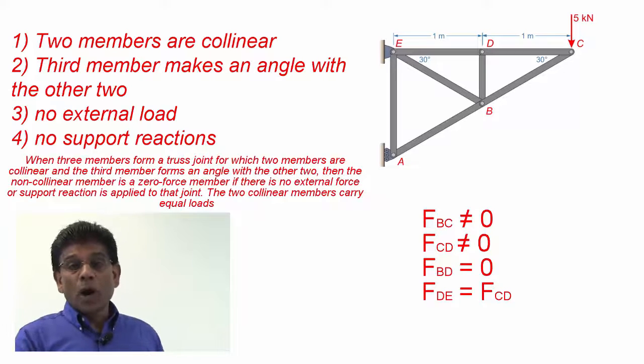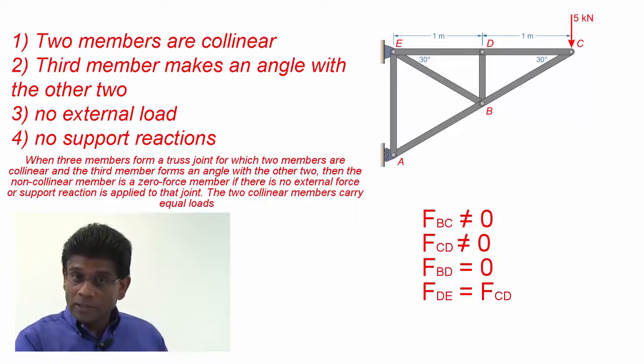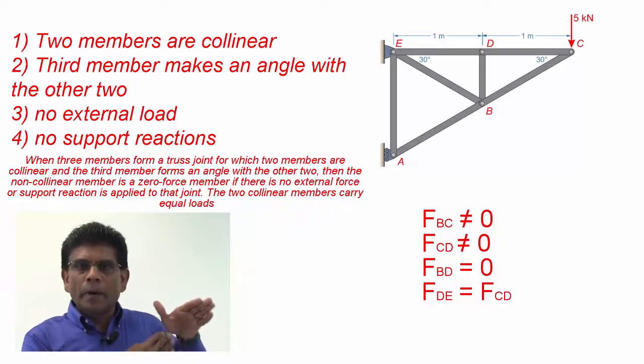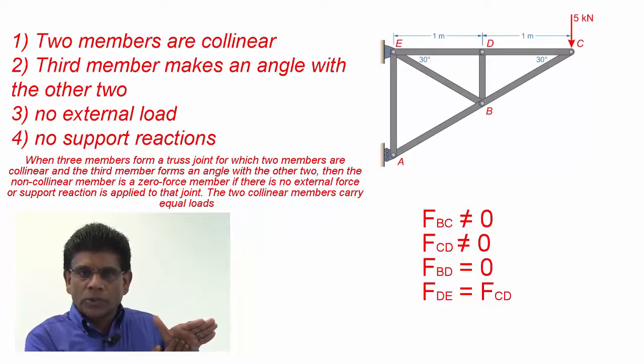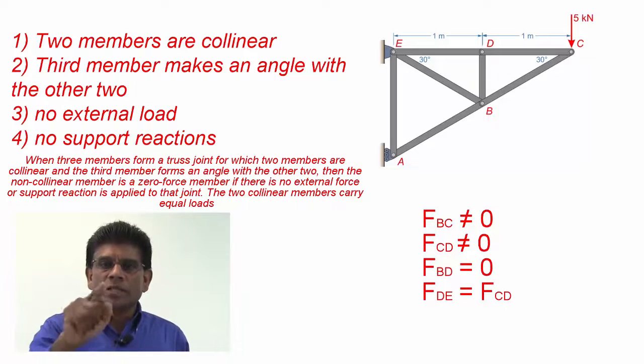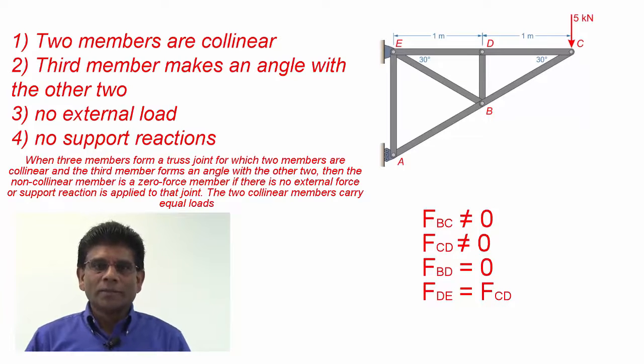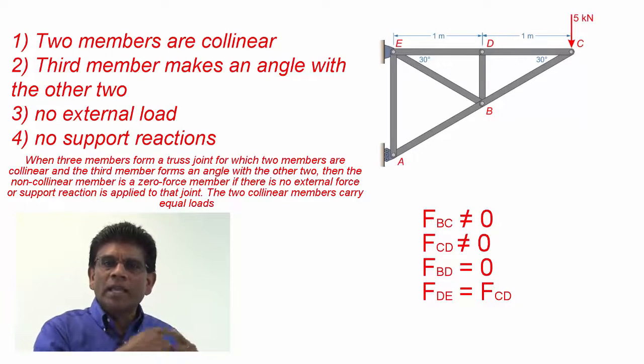When three members form a truss joint, for which two members are collinear, and the third member makes an angle with the other two, then the non-collinear member is a zero-force member, if there is no external load or support reaction applied at the joint. The two collinear members carry equal loads.